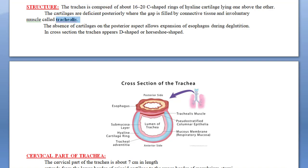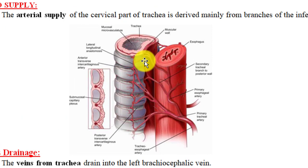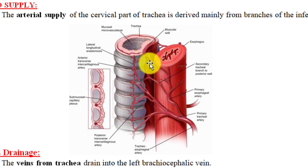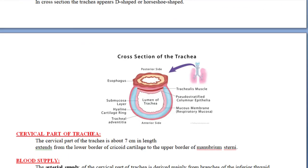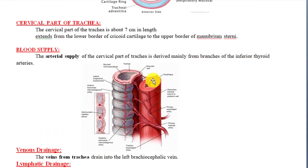In the next diagram, look carefully: the cartilage begins on one side and goes to the other side, and both ends of the C-shaped ring are connected by the trachealis muscle behind it. The absence of cartilage on the posterior aspect allows expansion of the esophagus during dilation when the esophagus is full of food. When the esophagus expands, it applies pressure on the trachea, and the trachealis muscle is pushed inward to accommodate this expansion.